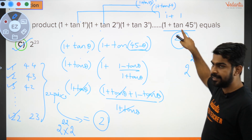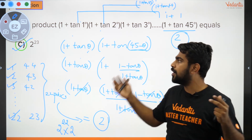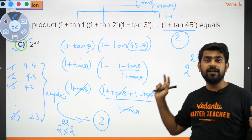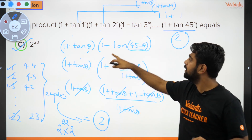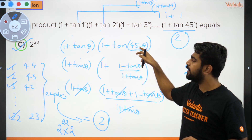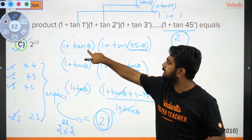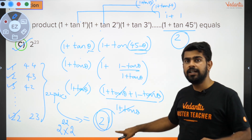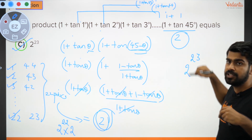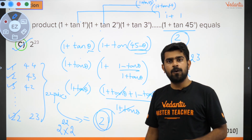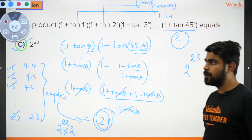To recap: I observed the last term is directly 2. There's no tan θ · cot θ pairing available, but I notice tan(1°) + tan(44°), tan(2°) + tan(43°) — angles adding to 45°. So I use (1 + tan θ)(1 + tan(45° − θ)) = 2. There are 22 such pairs giving 2^22, plus the standalone final term of 2, giving 2^23. Clear — let's move on.